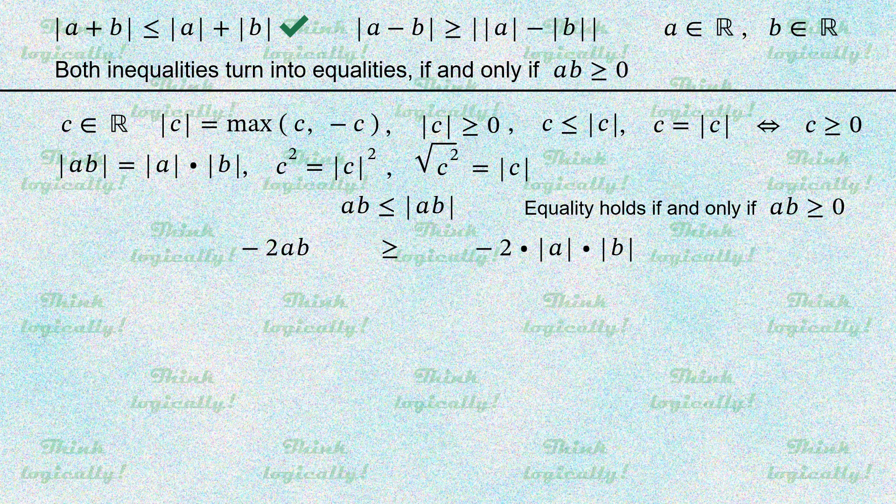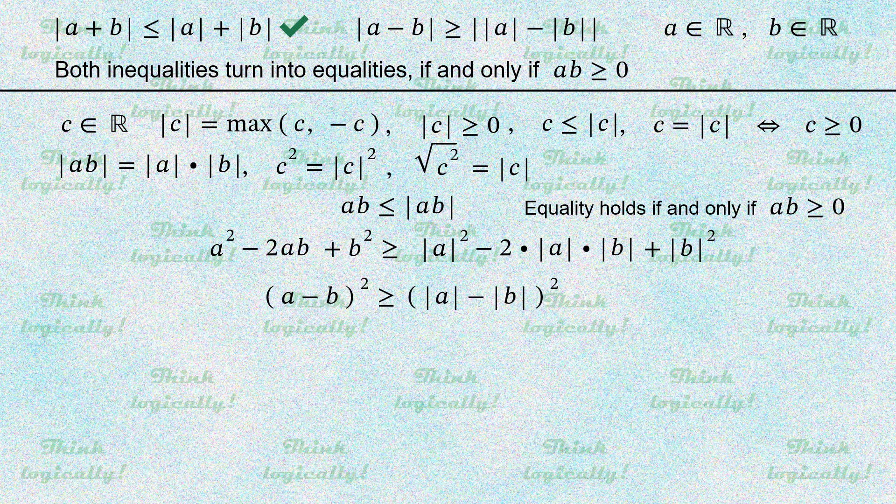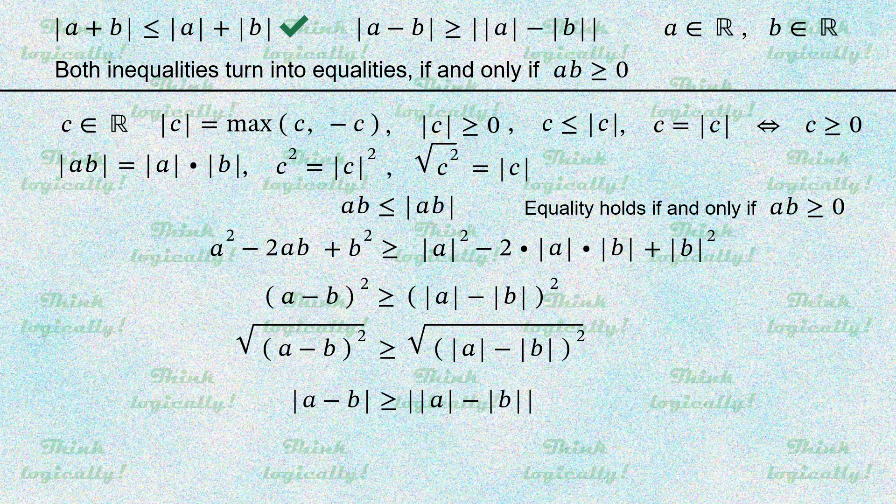And again we add a squared plus b squared to both sides and again factorize, take square roots, and replace them with absolute values.